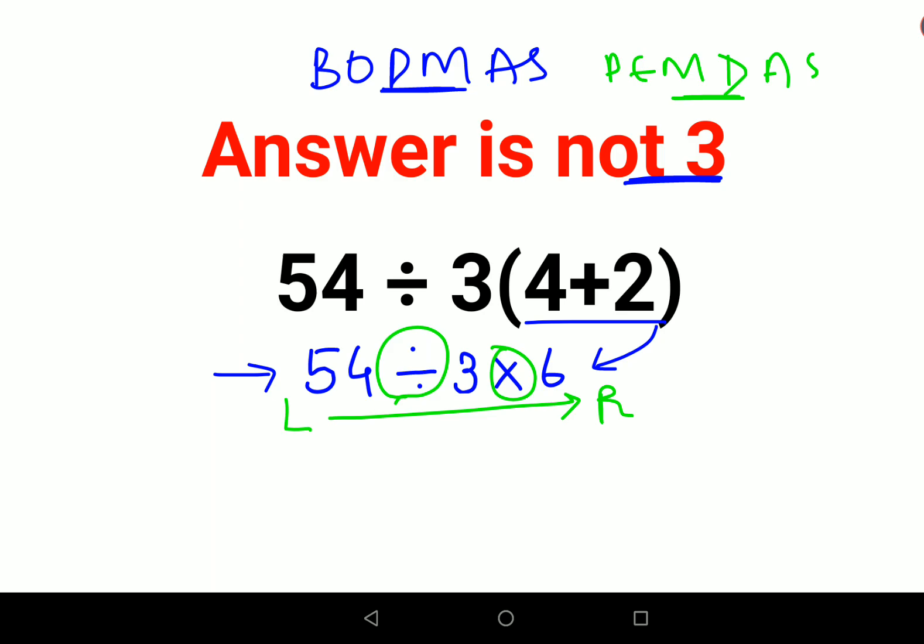54 divided by 3 gets you 18. Please understand, here I need to show this very clearly. Whenever you have a division sign, think about it this way: 54, whenever you have a division sign, you will follow the rule of KCF.